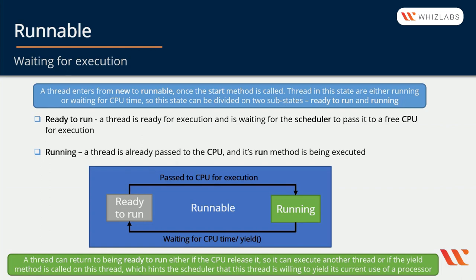Then we have the Runnable state. At first a thread enters this state once the thread method start is called. Threads in this state are either running or waiting for CPU time, so this state can be divided into two sub-states: Ready to Run and Running. When a thread is ready for execution and is waiting for the scheduler to pass it to the CPU, we say it's Ready to Run. This is a logical sub-state, not a real one — the state is still Runnable.